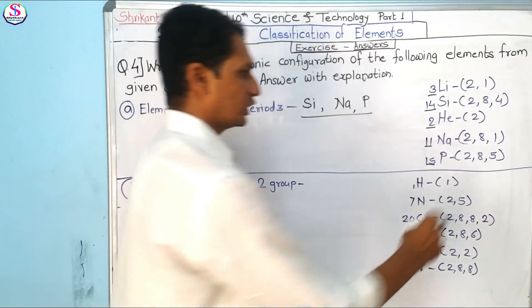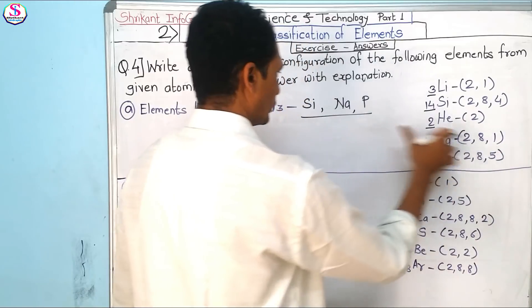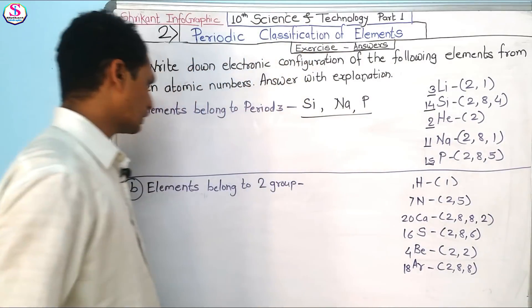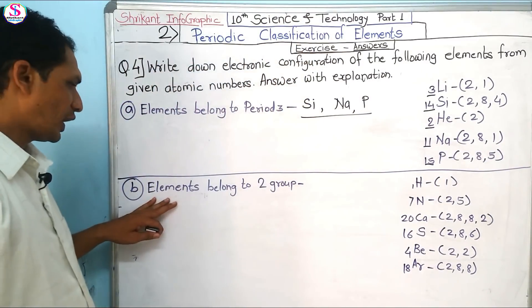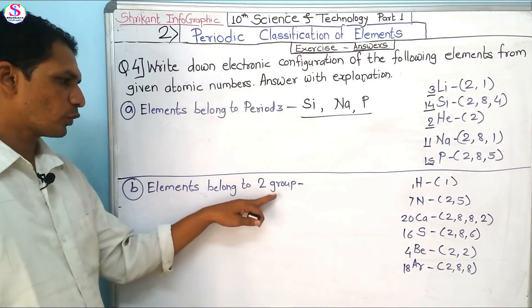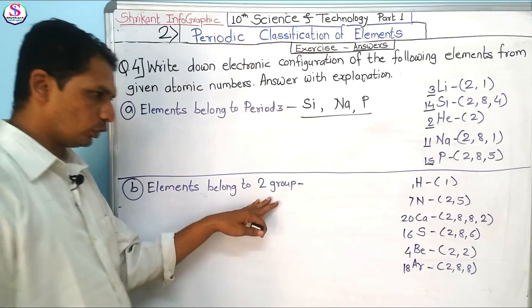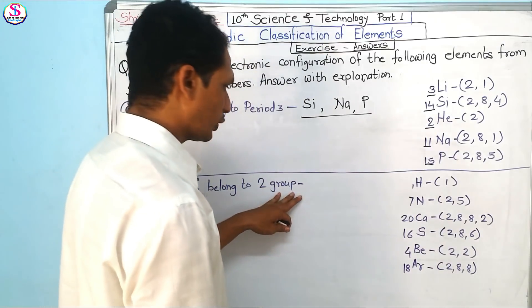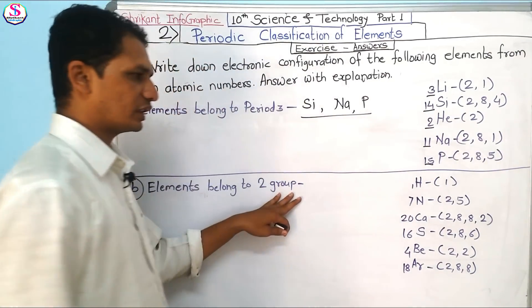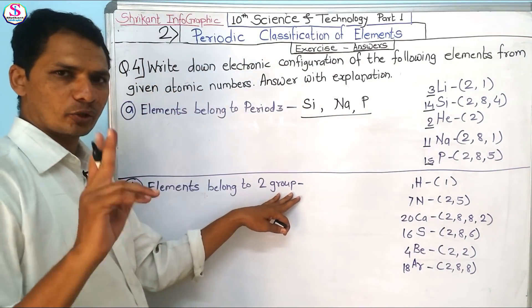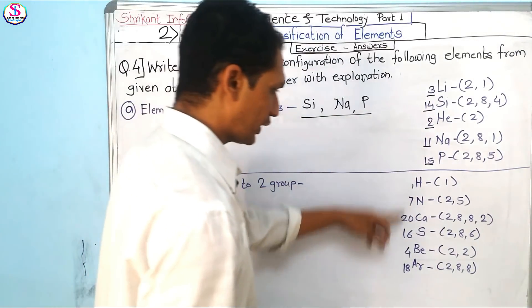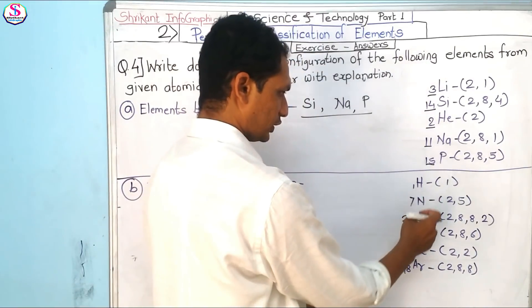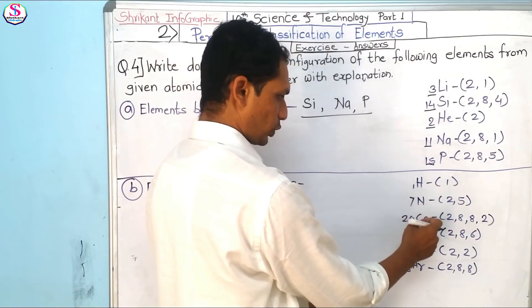For part B — elements belonging to the second group — they must have valence 2. Among the given elements (hydrogen, nitrogen, calcium, sulfur, beryllium, and argon), calcium and beryllium belong to Group 2 because they have valence 2.